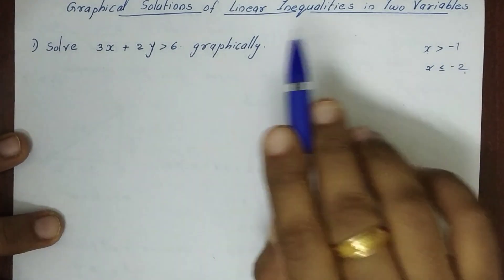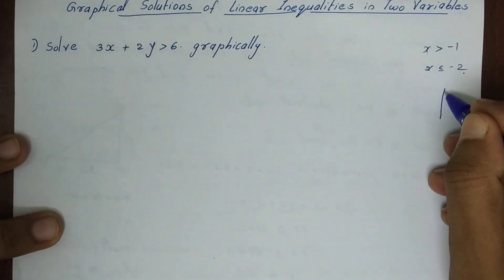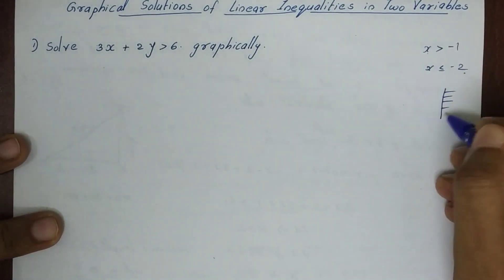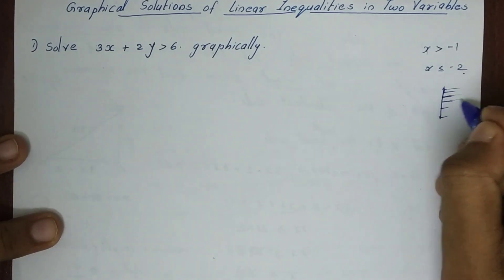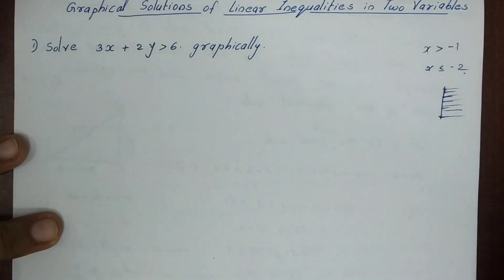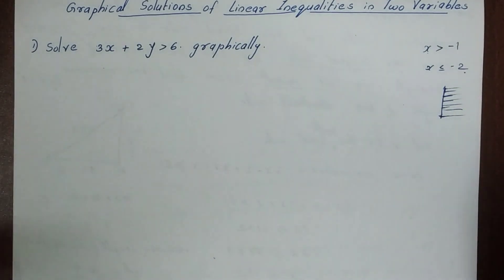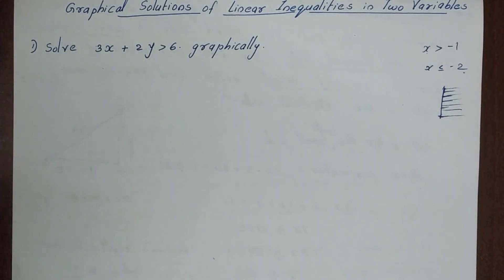In this graphical method, we will find a region — that is the shaded portion. We will find solutions in that equation. This is a simple topic with two to three steps.